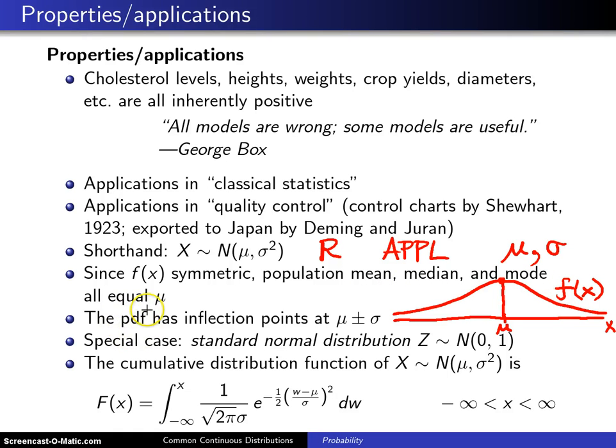The probability density function of the normal distribution has inflection points at μ ± σ. If this is μ + σ, and the same distance over here you put in μ - σ, at those particular points there will be an inflection point. The PDF out here is concave up, between μ - σ and μ + σ it is concave down, and then to the right of μ + σ it is concave up again.